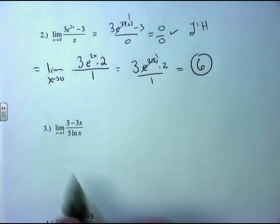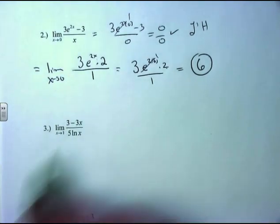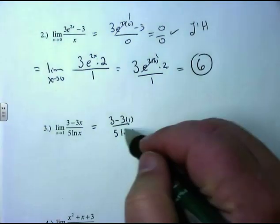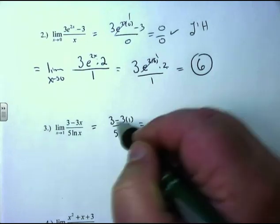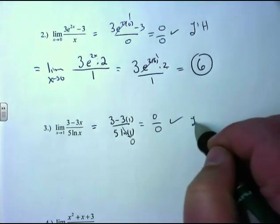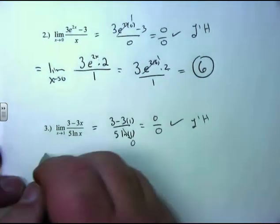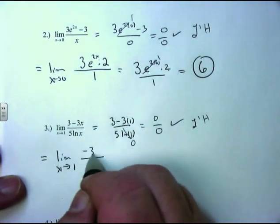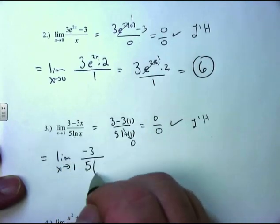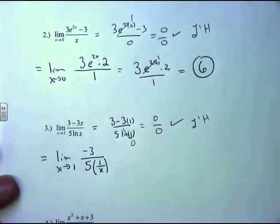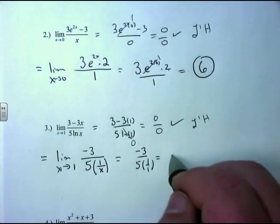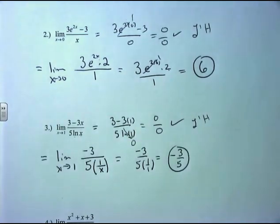Next example: the limit as x approaches 1 of (3 − 3x)/(5 ln x). Plugging in 1: numerator = 3 − 3(1) = 0, denominator = 5 ln(1) = 5(0) = 0, so we get 0/0. Applying L'Hôpital's rule: derivative of 3 − 3x is −3; derivative of 5 ln x is 5 · (1/x). Plugging in x = 1: −3 / (5 · 1/1) = −3/5. The limit is −3/5.